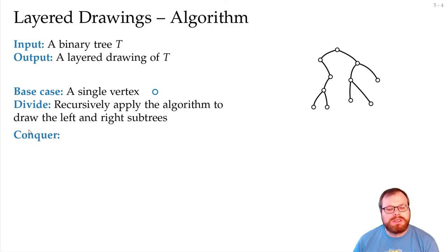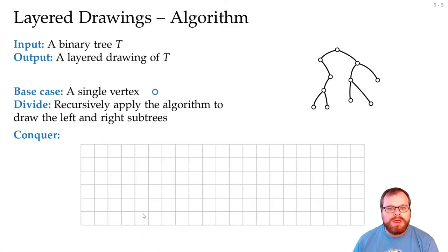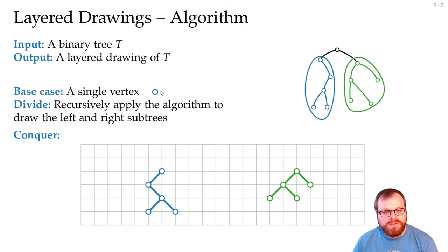So, for the conquer step, we can assume that they are already drawn. And now we want to put those two trees together with the drawing of the root, which is just a single vertex, but there's somewhere in the middle.